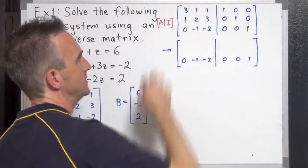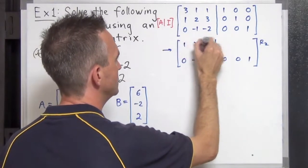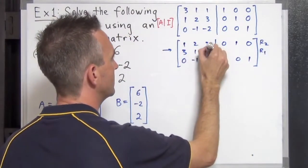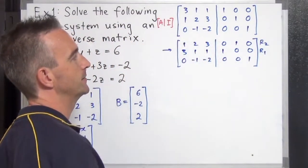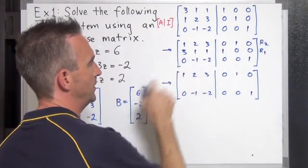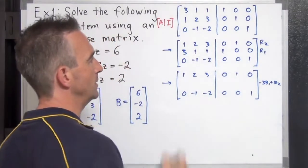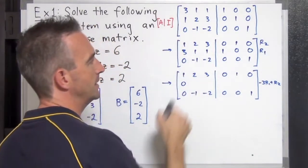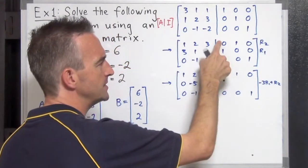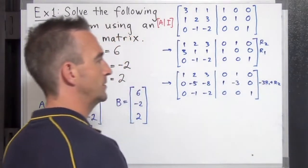To get a leading one, I'm going to switch the first and second rows. Row two goes up to the top: 1, 2, 3, 0, 1, 0. And the first row moves down to the second position: 3, 1, 1, 1, 0, 0. Now we want to use that leading one to turn the entry below into a zero — multiply row one by negative 3 and add it to row two. Negative 3 times row one plus row two: that gives 0, negative 5, negative 8, 1, negative 3, 0.